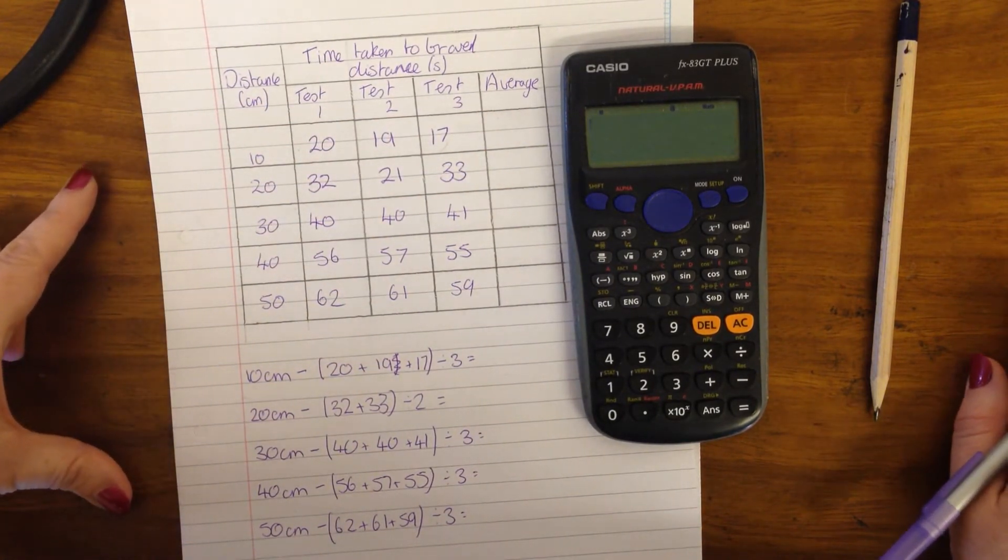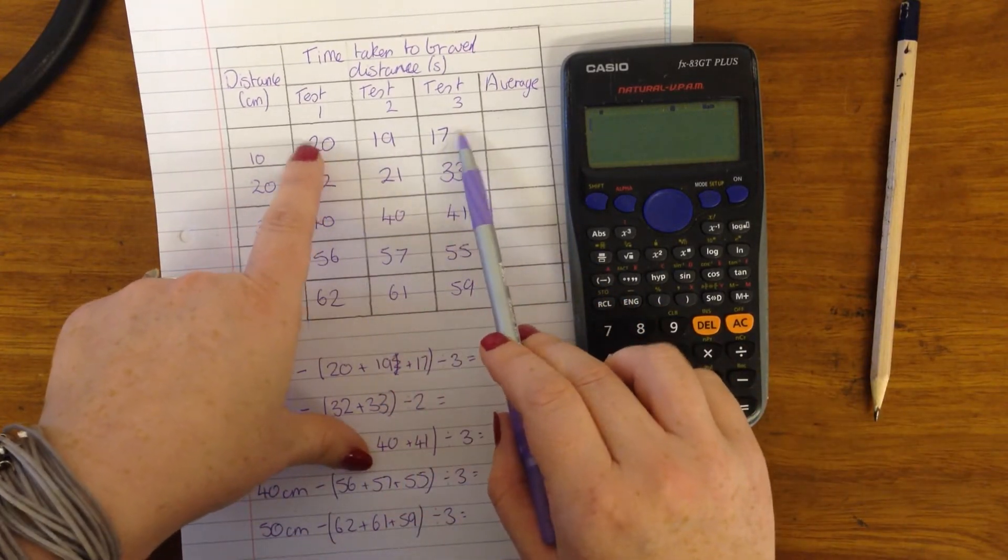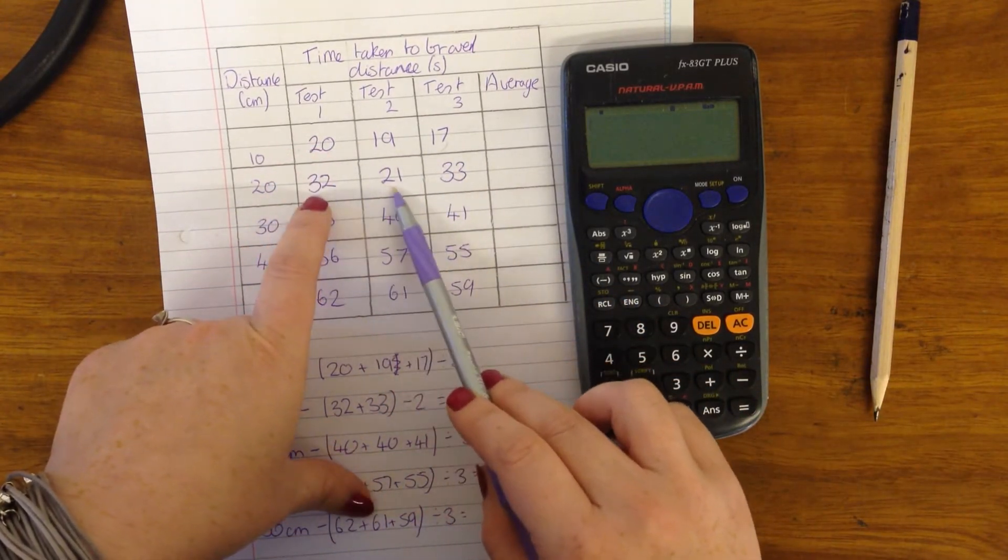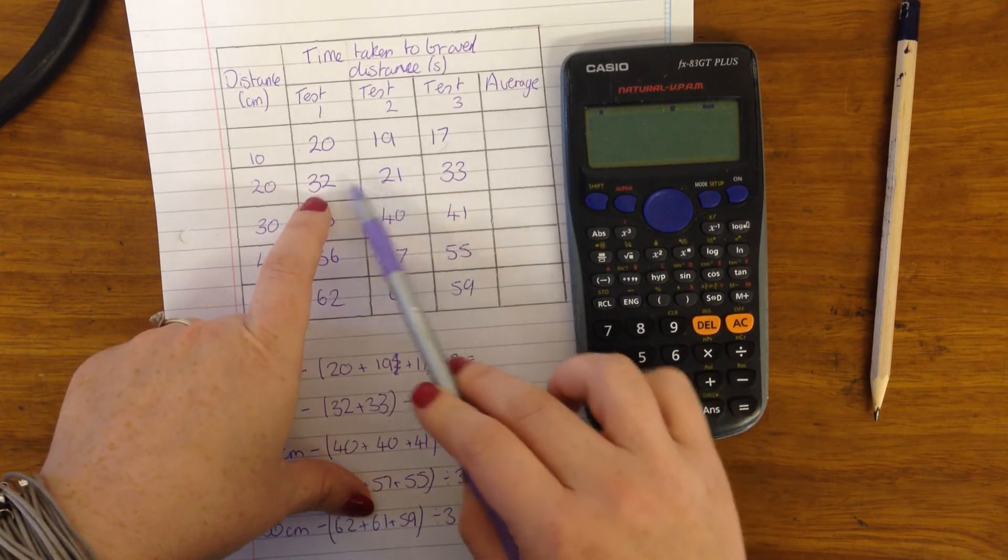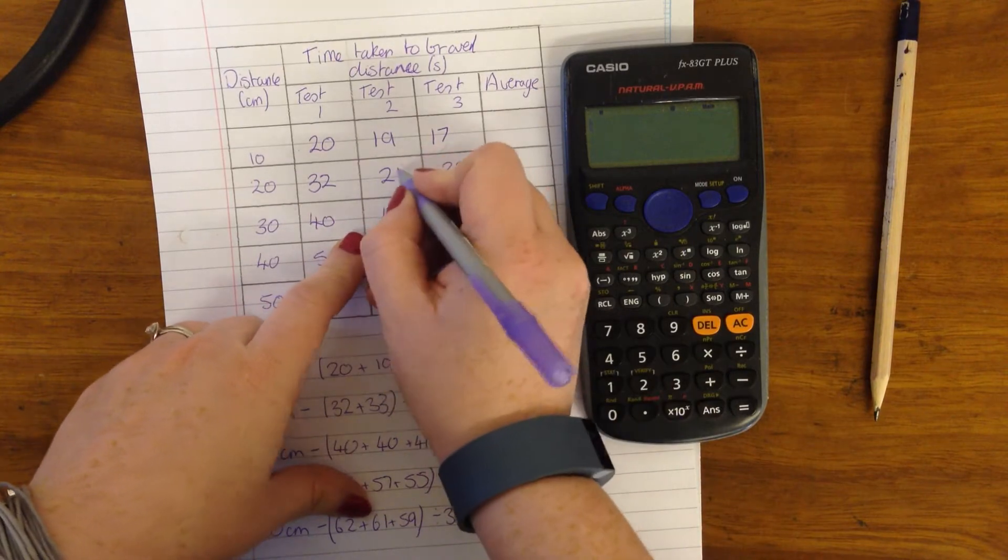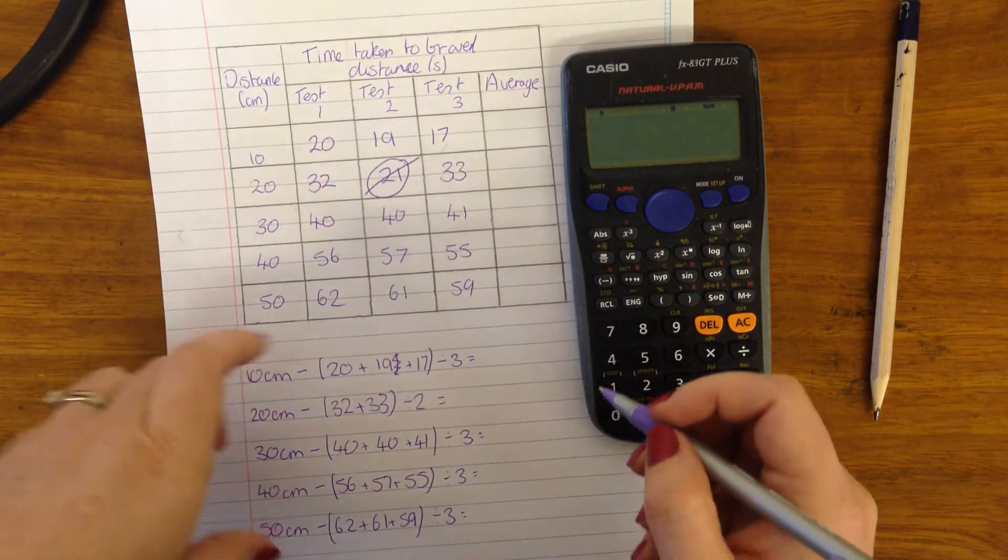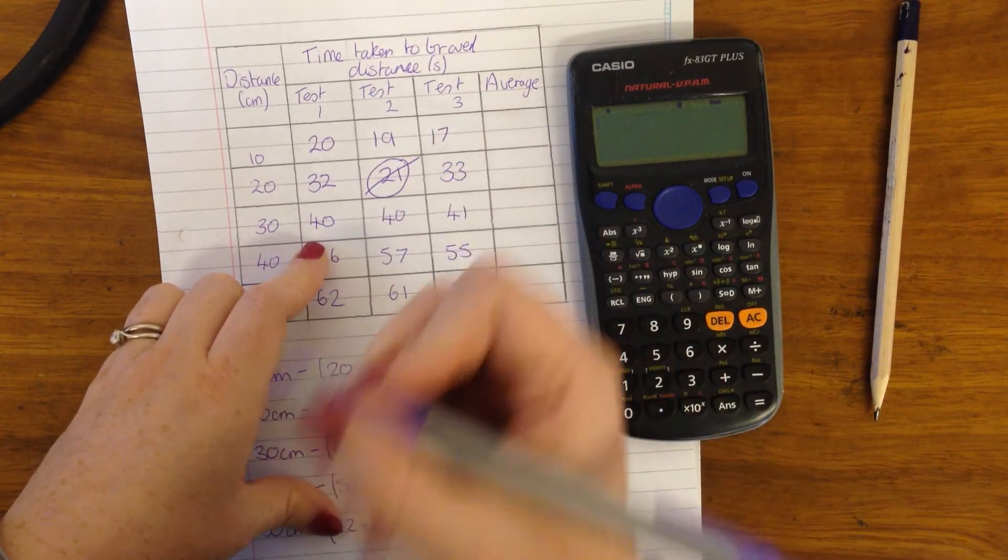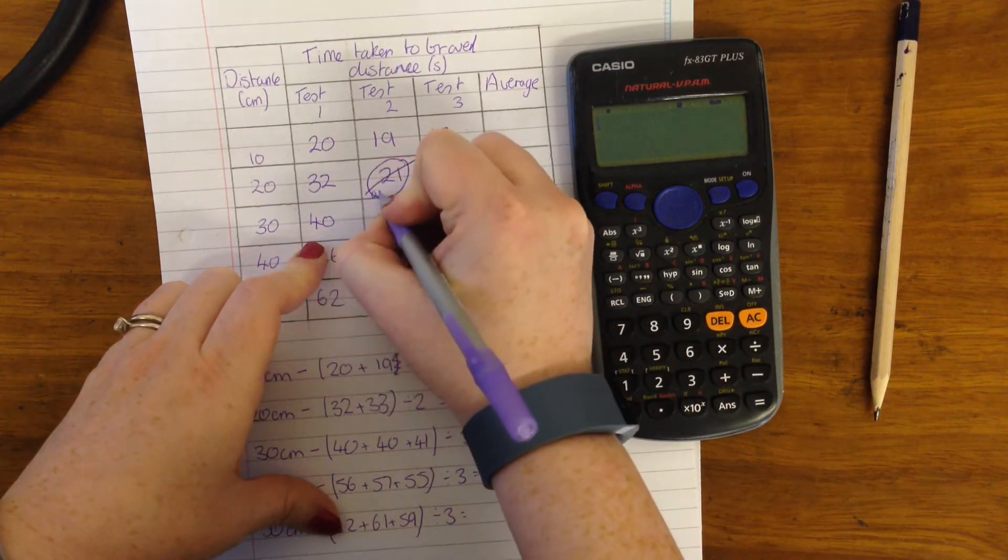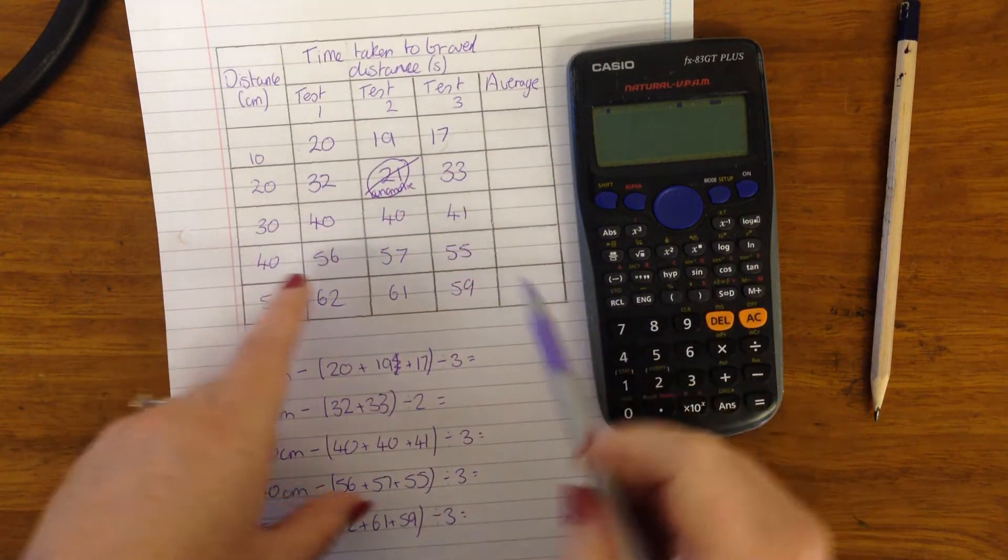So the first thing you need to do is to look for anomalies. Now all of these numbers are roughly the same. Here we've got 32, 21 and 33. And you can see that 21 is quite a long way from either 32 or 33. So what I'm going to do is draw a circle and a line through it so that I know that it's an anomaly, if you want to really show off and tell the examiner you know it's an anomaly.